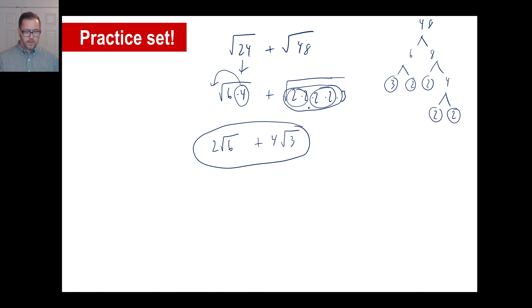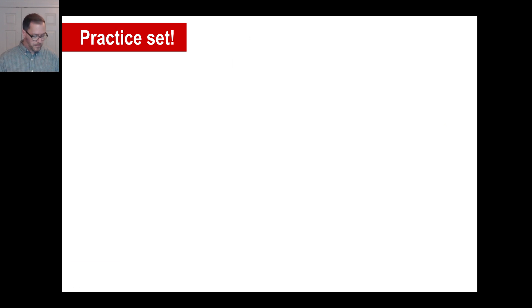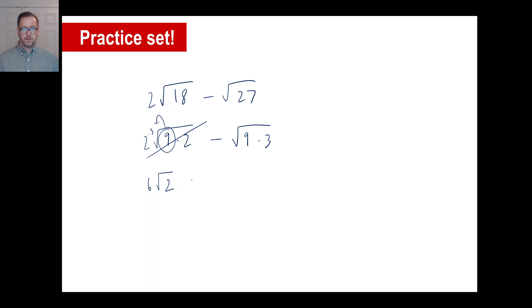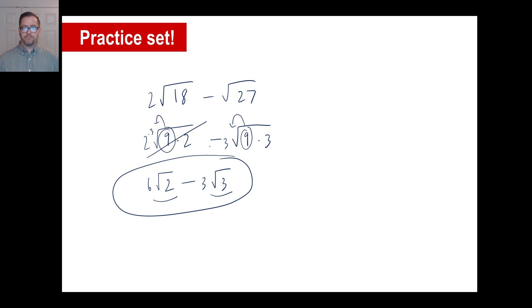Pause it and try B: 2 square root of 18 minus the square root of 27. Let's break this down — 2 stays there, 18 is 9 times 2, and 27 is 9 times 3. The square root of 9 is 3, so it comes out multiplied by 3, giving 6 square root of 2. For the second term, the square root of 9 comes out as 3, giving 3 square root of 3. Since square root of 2 and square root of 3 are not like terms, that's as far as you can go.